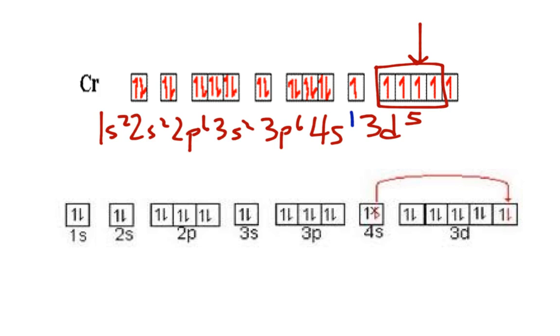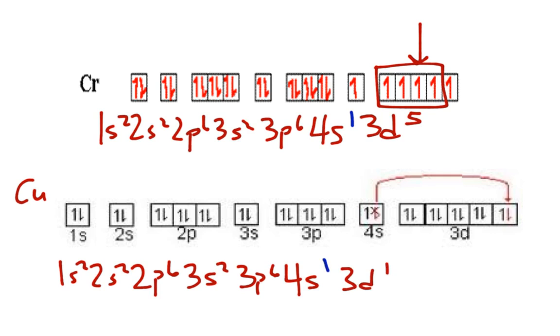And then copper becomes 1s² 2s² 2p⁶ 3s² 3p⁶ 4s¹—again, there's that one—and then 3d¹⁰. With that electron moving from here all the way over to here, these are the exceptions to Aufbau. Only two, but exceptions do have the way of finding their way to the test.